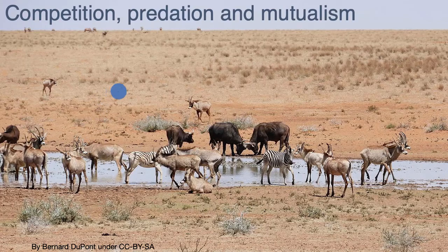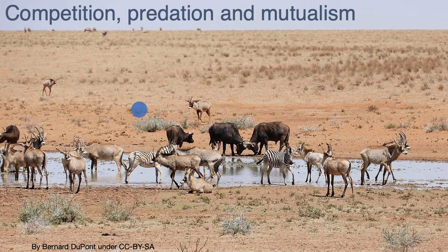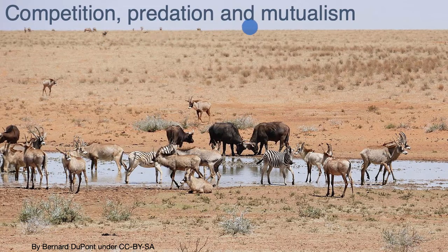All across ecosystems, we know that organisms interact in specific ways, and scientists use special words to describe these types of interaction: competition, predation, and mutualism.